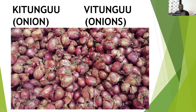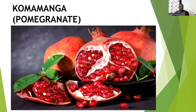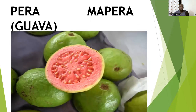Then there is komamanga — pomegranate. Then there is pera — guava. In plural is mapera. So in singular is pera, in plural is mapera.